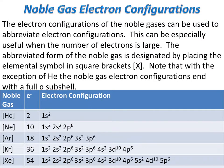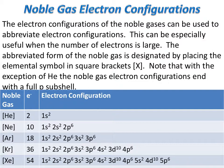Imagine having to do electron configurations for elements such as lead or uranium with their incredibly large numbers of electrons — the configurations would get incredibly long. We can use the electron configurations of the noble gases to abbreviate our electron configurations. The abbreviated form of the noble gas is designated by placing the elemental symbol in square brackets. Note that with the exception of helium, the noble gas electron configurations end with a full p-subshell.